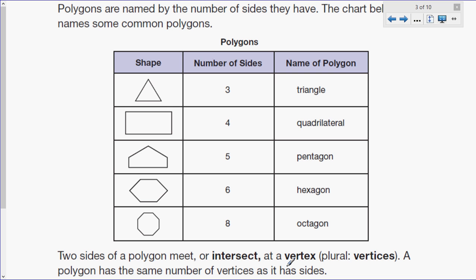Polygons are named by the number of sides they have. The chart below names some common polygons. So we have a chart very similar in the classroom. We have the shape along the side, we have the number of sides in the middle column, and of course, the name of the polygon on the right. Now it's important to note that a polygon not only has that many sides, but also that many vertices. The first one, we have a triangle here. I'm just going to put dots on the three vertices. There are also three vertices.